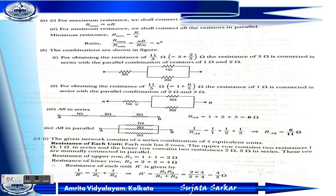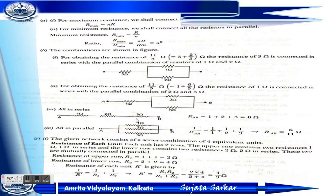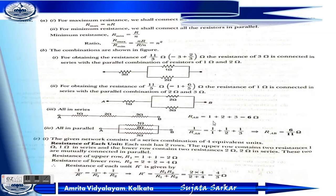For 6 ohm: connect all three resistors 1, 2, and 3 ohm in series — giving 1 plus 2 plus 3 equals 6 ohm. For 6/11 ohm: connect all three resistors 1, 2, and 3 ohm in parallel — giving 6/11 ohm.